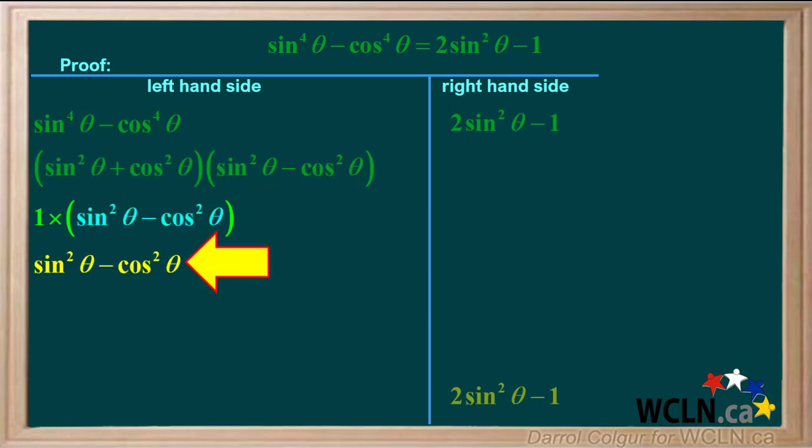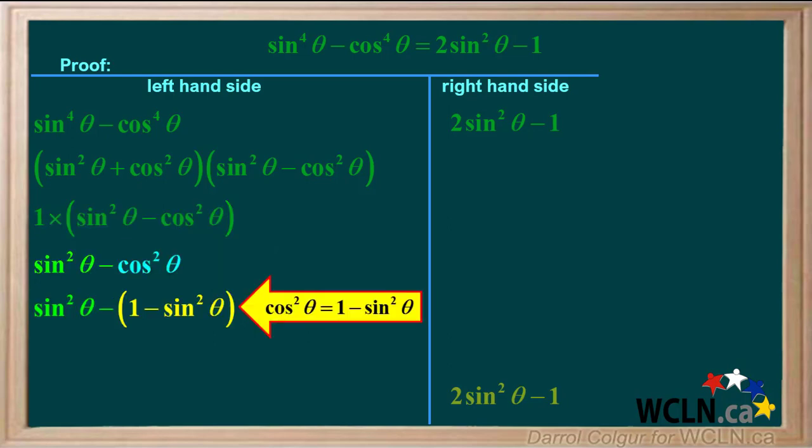So the expression is sine squared theta minus cos squared theta. Rearranging the Pythagorean identity sine squared theta plus cos squared theta equals one gives us cos squared theta equals one minus sine squared theta.